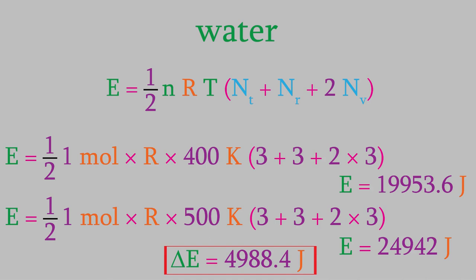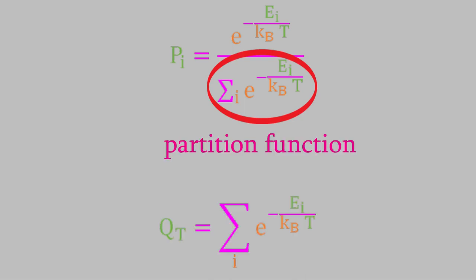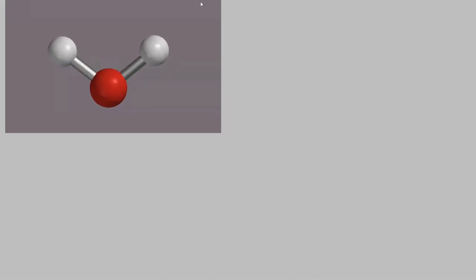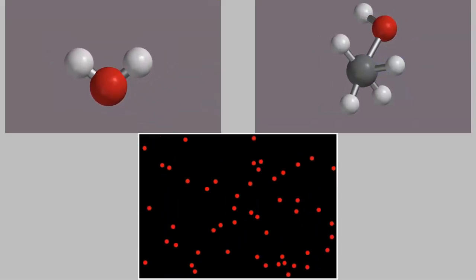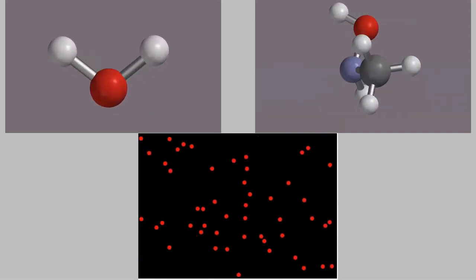Now we know how to calculate different forms of energy, but how likely is it that a given particle will have that energy? Back in video 41, we saw that the probability that a molecule is in a given energy state uses this equation, where the denominator is called the partition function. We can express the energy in that exponent differently depending on whether it's vibrational, rotational, or translational energy. Let's look at each of those possibilities and see how the expression for the partition function differs in each case.